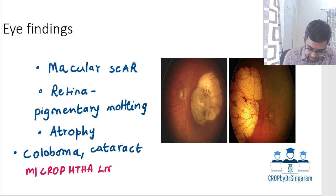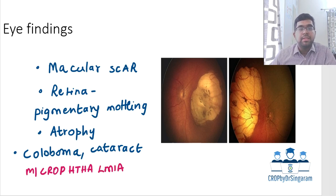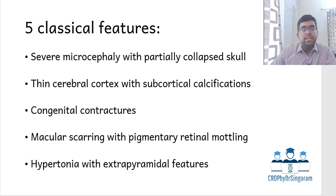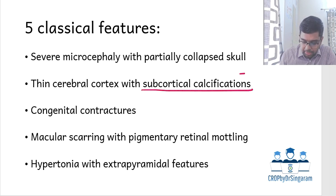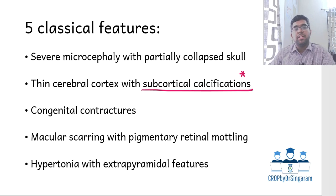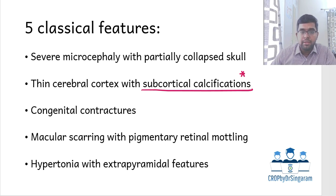This condition can affect the brain, the eye, the hearing, and cause contractures. The five cardinal features of congenital Zika syndrome are: severe microcephaly with a partially collapsed skull, thin cerebral cortex with subcortical calcifications, contractures manifesting as arthrogryposis multiplex congenita, eye findings including macular scarring and pigmentary retinal mottling, and hypertonia with extrapyramidal features.